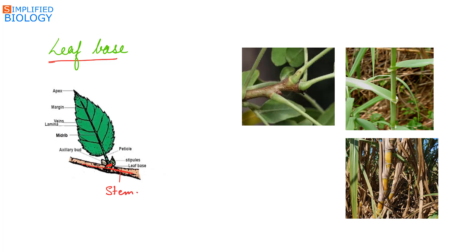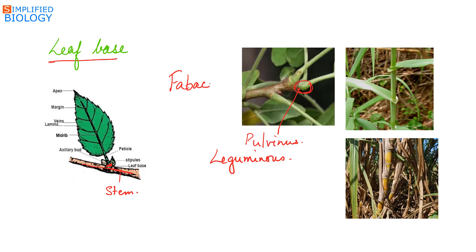The leaf base can be pulvinus, meaning it is swollen up, as seen in leguminous plants — plants that carry out nitrogen fixation. A pulvinus leaf base is a characteristic of family Fabaceae. In monocots, a sheathing leaf base is seen.